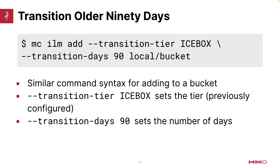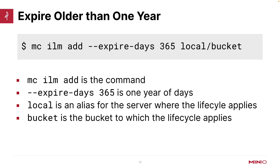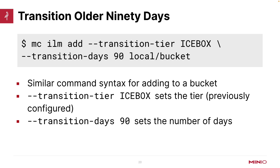Going back one slide: the MC ILM add expire 365 for the local bucket will be a second rule alongside MC ILM add transition. After 90 days the object will be transitioned to icebox, but after a year it will also be deleted from icebox. Remember, you're still working on all the objects in that local bucket even after transition, so I'm still expiring after a year — I'm just transitioning after 90 days. Both rules will apply.